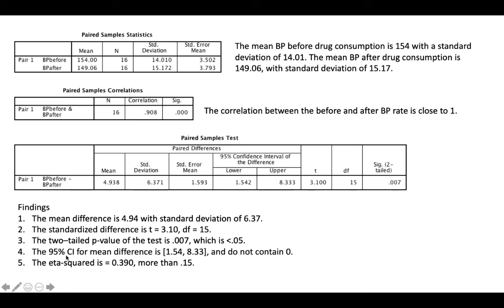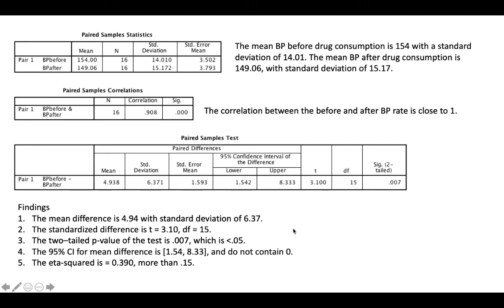The 95% confidence interval for the mean difference has a lower bound of 1.54 and upper bound of 8.33, and does not contain 0 because both are on the positive side. If the CI is positive and negative, it passes through 0, which means the p-value probably will not be significant. Since it is significant here, we don't pass through 0. The eta squared is T-squared divided by T-squared plus DF.